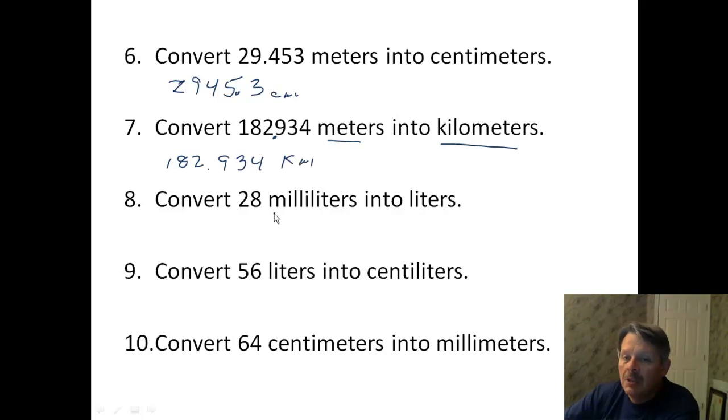I'm converting milliliters, that's a small amount, to liters, which is a big amount. There are 1,000 milliliters in a liter. So if I'm converting to liters, I have to move my decimal three positions. So that becomes 0.028 liters.